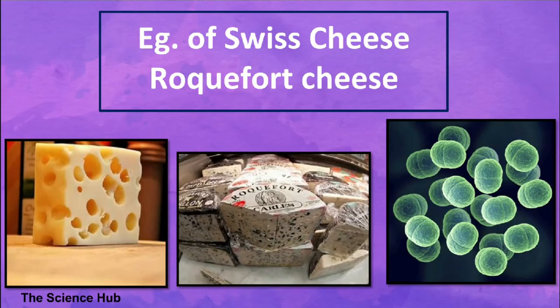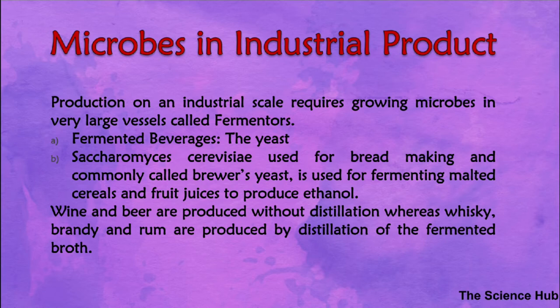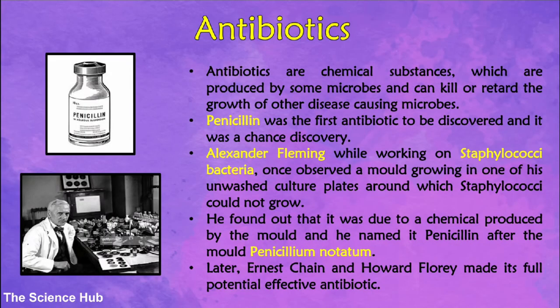Here we can see examples of Swiss cheese and Roquefort cheese. In microbes in industrial production, a number of products like beverages and antibiotics are produced on a large scale in very large vessels called fermenters. Saccharomyces cerevisiae, commonly called brewer's yeast, is used for fermenting malted cereals and fruit juices to produce beverages like wine, beer, whiskey, and rum. Wine and beer are produced without distillation, whereas whiskey, brandy, and rum are produced by distillation of the fermented broth.